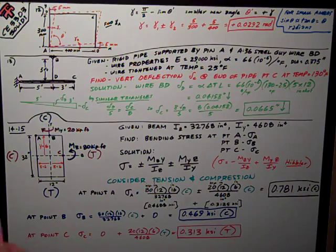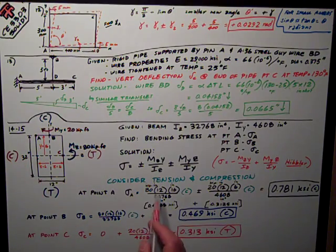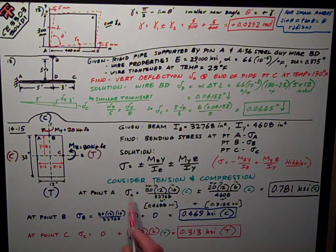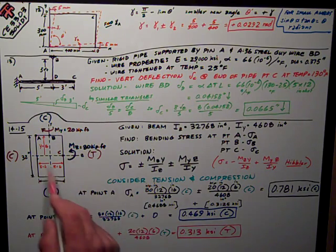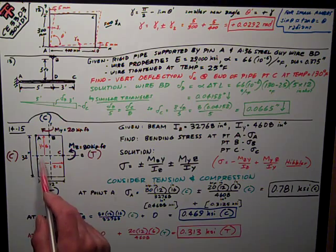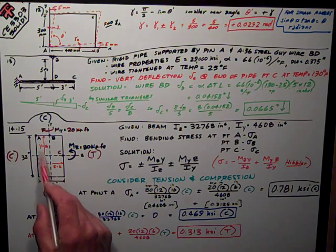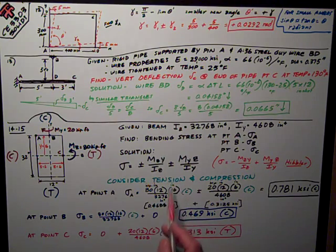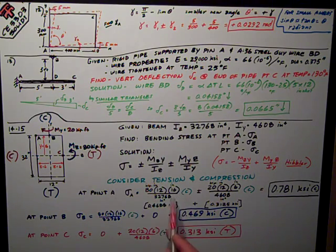At point A, up here in this upper left hand corner, the moment about the z-axis is this 80 kip-feet. I've converted it with 80 times 12 to convert it into kip-inches. My y distance is 16 inches from the neutral axis, divided by I_z = 32,768.